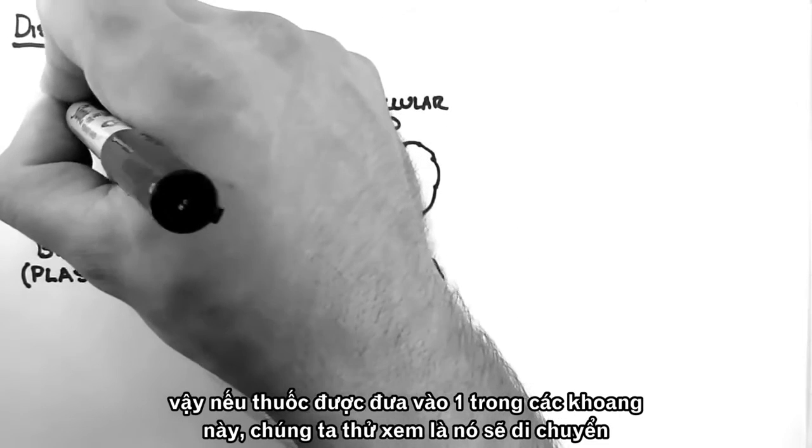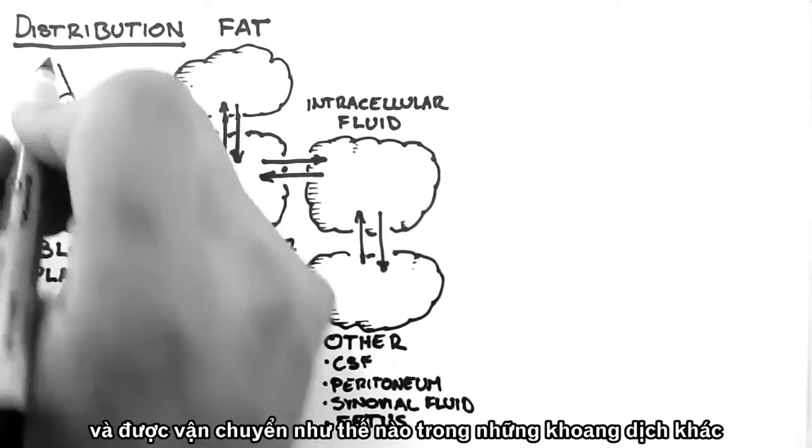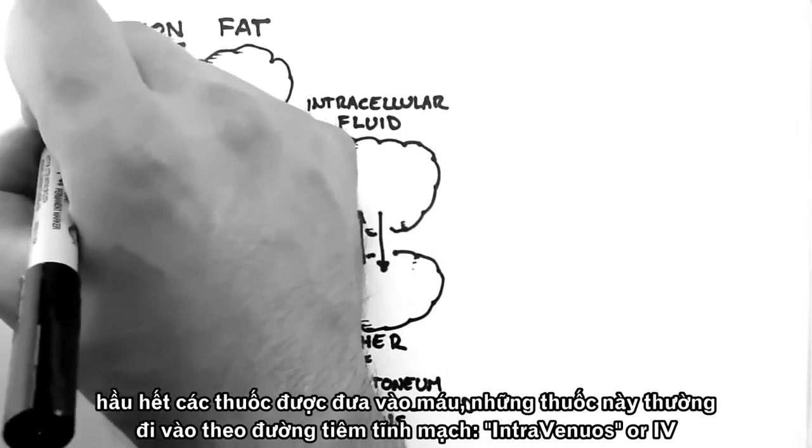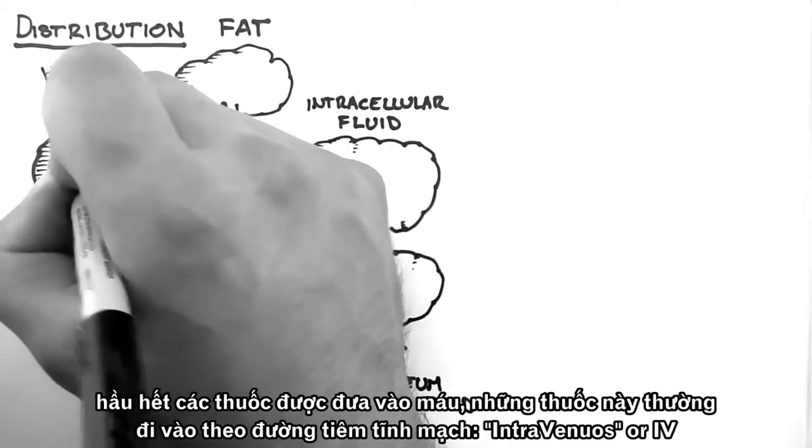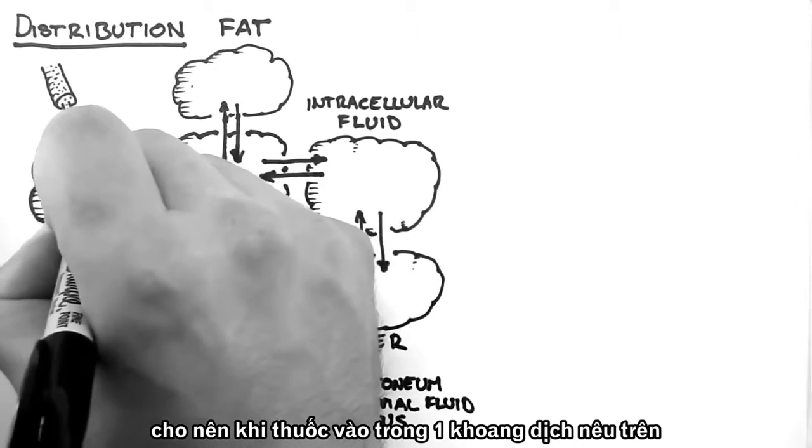So if a drug is placed into one of the compartments, we can see how it might move and distribute into other compartments. Often drugs are placed into the blood. These are drugs which are given intravenously.